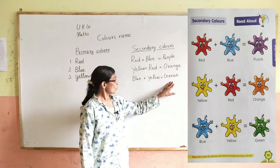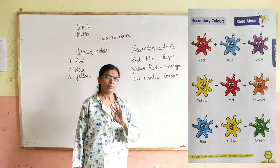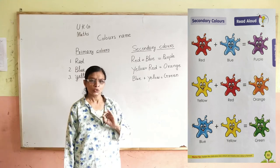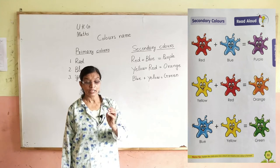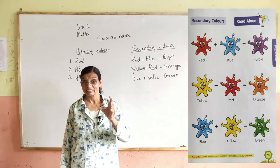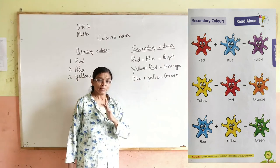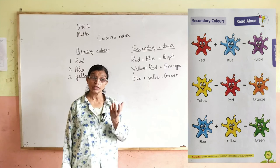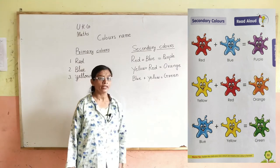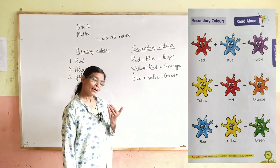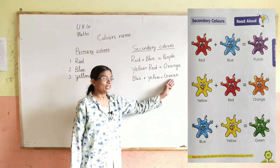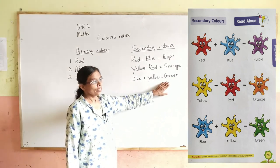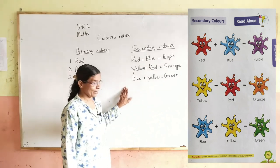Blue and yellow make green. There is orange color, red color, pink color, but there is no green color. If there is no green color, it will not become food. Do you understand?